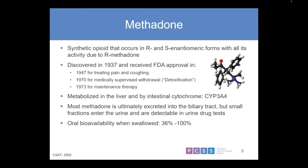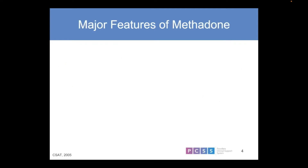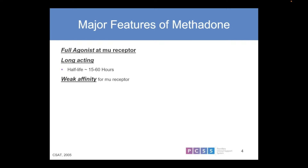The oral bioavailability of methadone when swallowed is quite variable, between 36 and 100%. We're going to refer to full agonist, partial agonist, and antagonist. Methadone is a full agonist. It's very long acting — the half-life is between 15 and 60 hours, in part because of active metabolites. It has a weak affinity at the mu receptor, so the potential that it displaces other opioids is much weaker compared to buprenorphine or naltrexone.